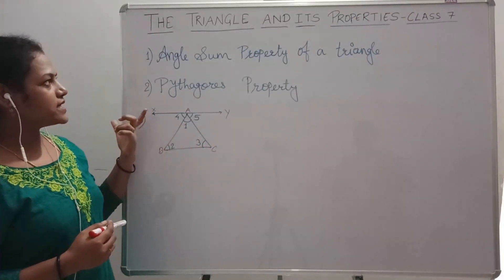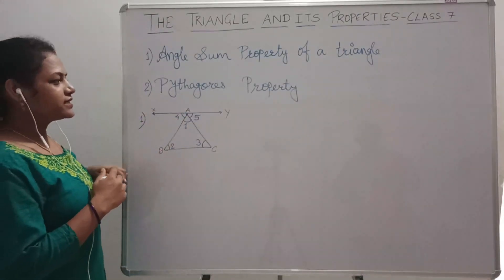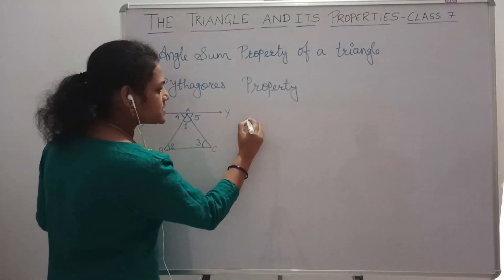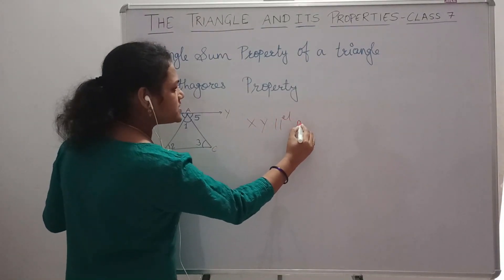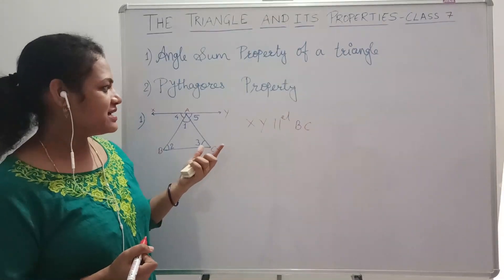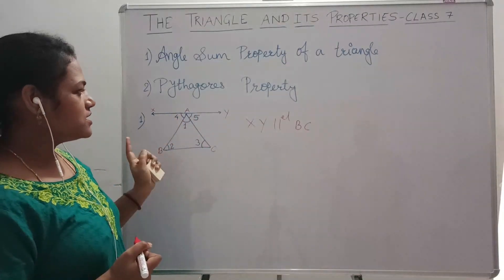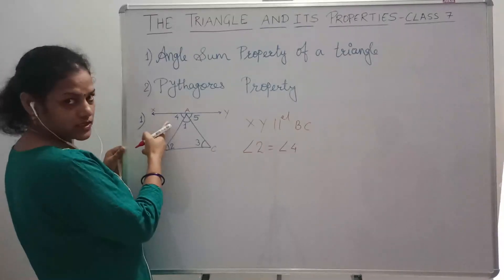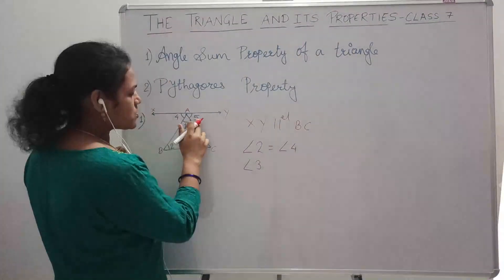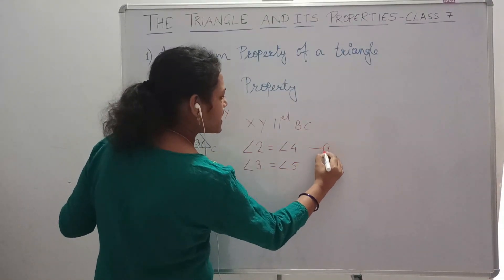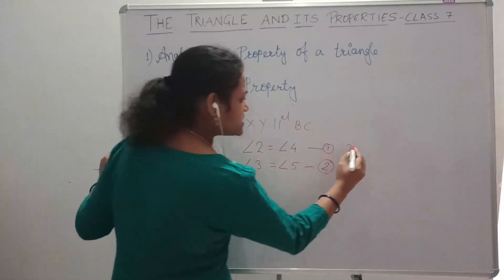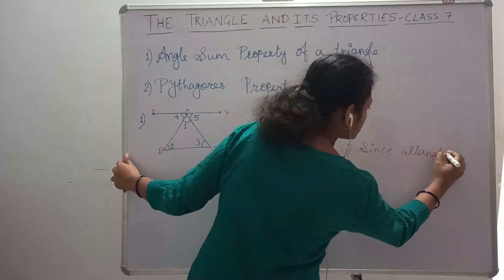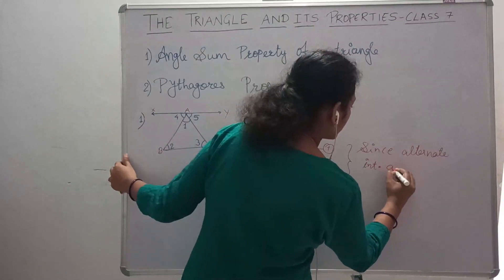First we will see topic 1, that is the angle sum property of a triangle. Here I consider one triangle ABC. You have to draw a line XY parallel to BC. Since line XY is parallel to BC, angle 2 is equal to angle 4, and angle 3 is equal to angle 5, because these are alternate interior angles.